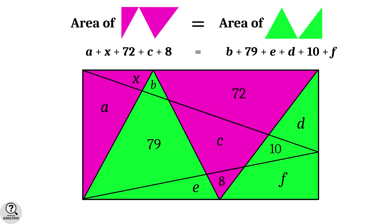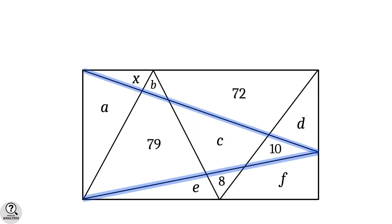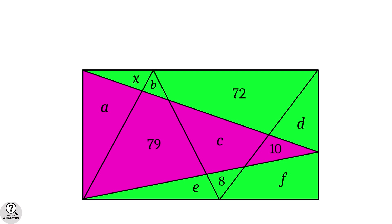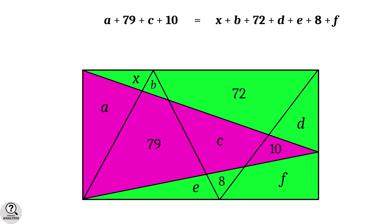Simplifying gives: a plus x plus c equals b plus e plus d plus f plus 9 — call this equation 1. Now consider two different lines. By the same property, the pink region area is a plus 79 plus c plus 10, and the green region area is x plus b plus 72 plus d plus e plus 8 plus f. Simplifying gives: a plus c plus 9 equals x plus b plus d plus e plus f — call this equation 2.